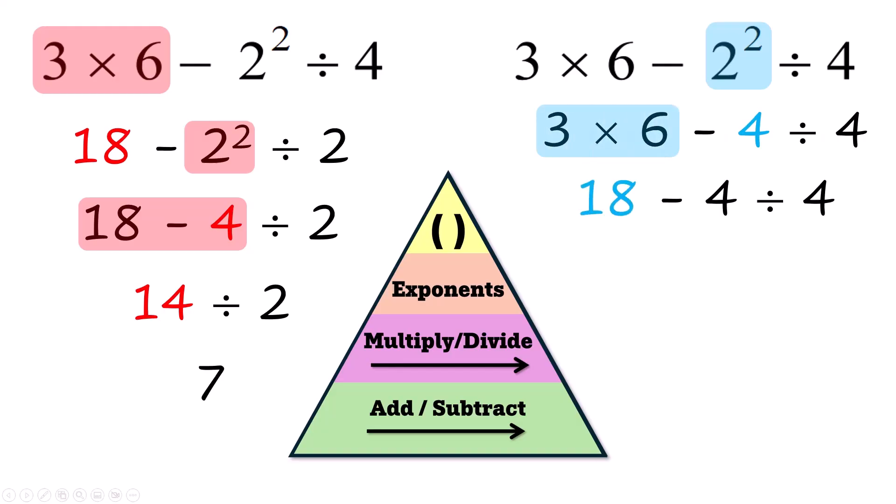I have 18 minus 4 divided by 4. Now I have to do this division. 4 divided by 4 is 1. So I have 18 minus 1, and I get 17. 17 is the correct answer. Yay!